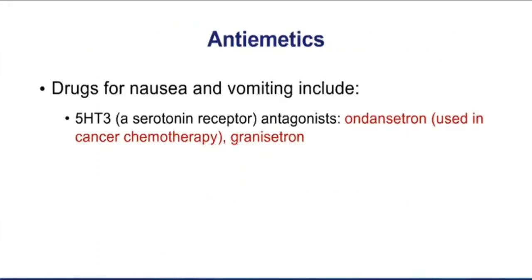When we look at the serotonin 5-HT3 blockers, we find a family name for these drugs: -setron. Examples would be ondansetron and granisetron. These are very popular anti-emetics today, including their use in cancer chemotherapy. A number of our chemotherapy agents are going to cause nausea and vomiting, so these drugs, perhaps along with others, are often used in those patients.